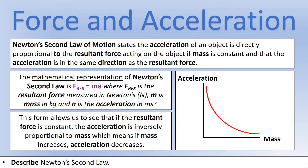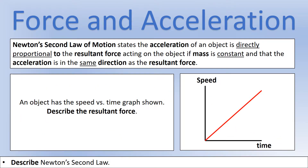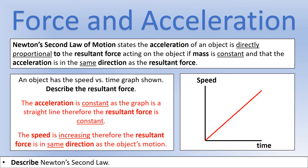Let's look at a few scenarios. First: an object with the speed versus time graph shown — describe the resultant force. The acceleration is the gradient of a speed versus time graph. We can see that the acceleration is constant because it's a straight-line graph, so the resultant force must be constant. We can also see that speed is increasing, so the resultant force must be in the same direction as the object's motion.